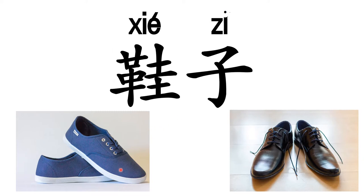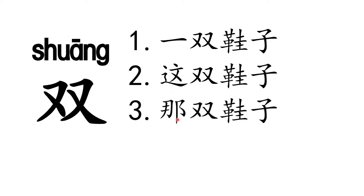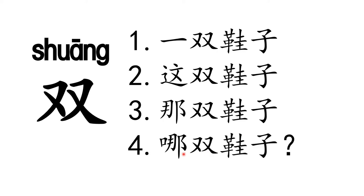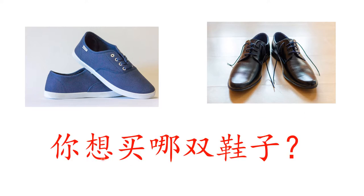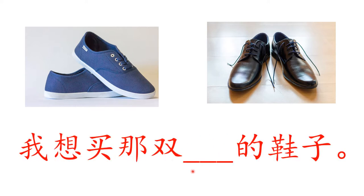鞋子 means 'shoes'. This one is 蓝色的鞋子 and this one is 黑色的鞋子. The measure word for 鞋子 is 双. 一双鞋子 means 'a pair of shoes', 这双鞋子 means 'this pair of shoes', 那双鞋子 means 'that pair of shoes', 哪双鞋子 means 'which pair of shoes?' With colors: 一双黑色的鞋子, 这双白色的鞋子, 那双绿色的鞋子. 你想买哪双鞋子? 我想买那双颜色的鞋子.